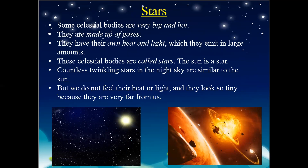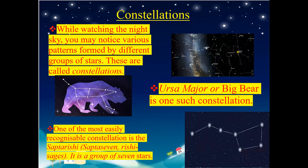There are countless twinkling stars in the night sky which are similar to the sun. But we do not feel their heat and light, and they look very tiny because they are really far from us. While you watch the night sky, you notice various patterns formed by groups of stars. These patterns formed by stars are known as constellations. For example, Ursa Major or Big Bear. One of the most easily recognizable constellations is the Sapta Rishi, which means a group of seven stars.